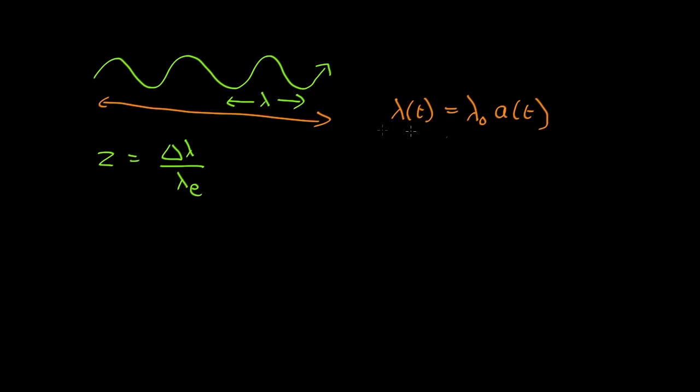So let's put that into here. The redshift is equal to the change of wavelength, which is the wavelength now minus the wavelength when the light was emitted at some time t, which is lambda_t, which is lambda_0 times a(t), all divided by the wavelength when it was emitted, which once again is lambda_0 times a(t).